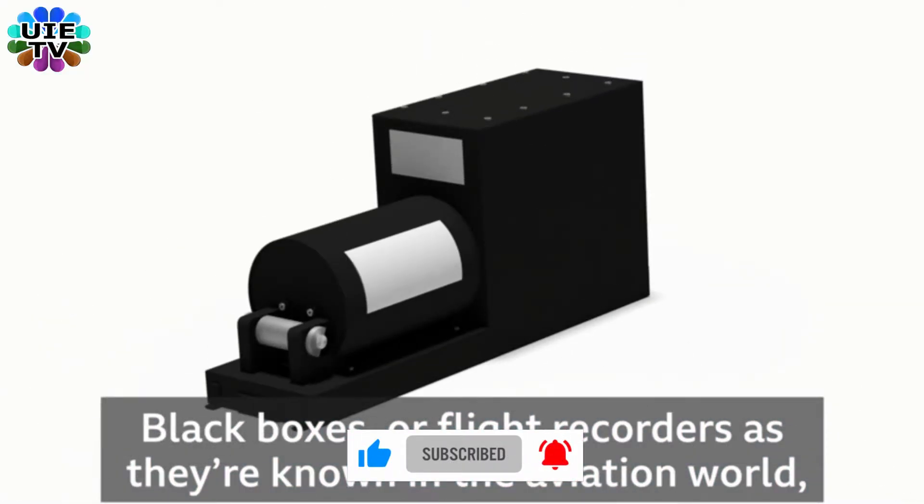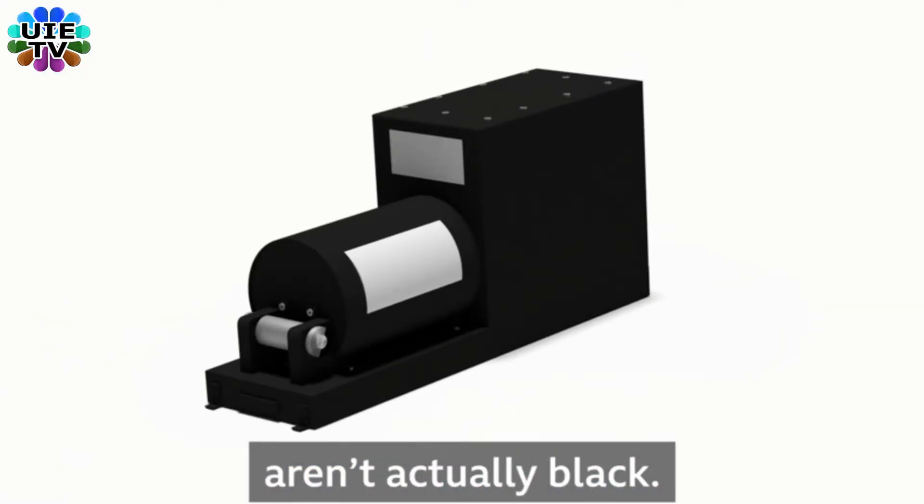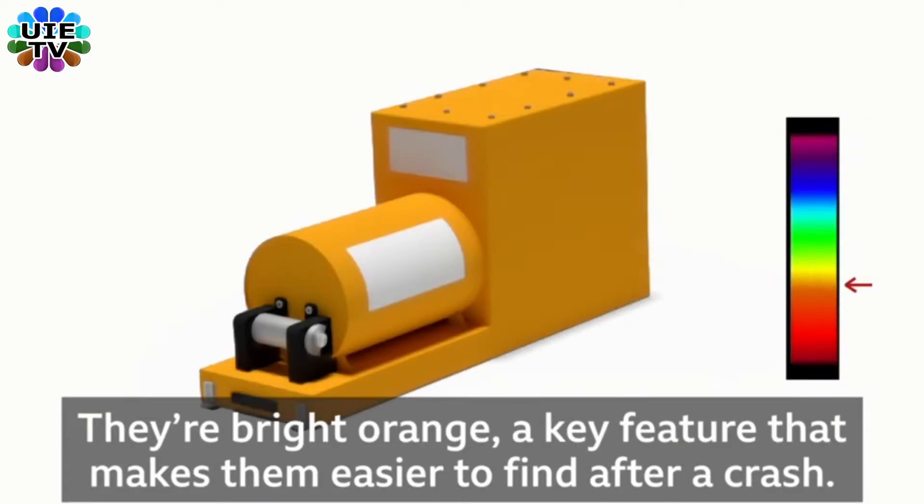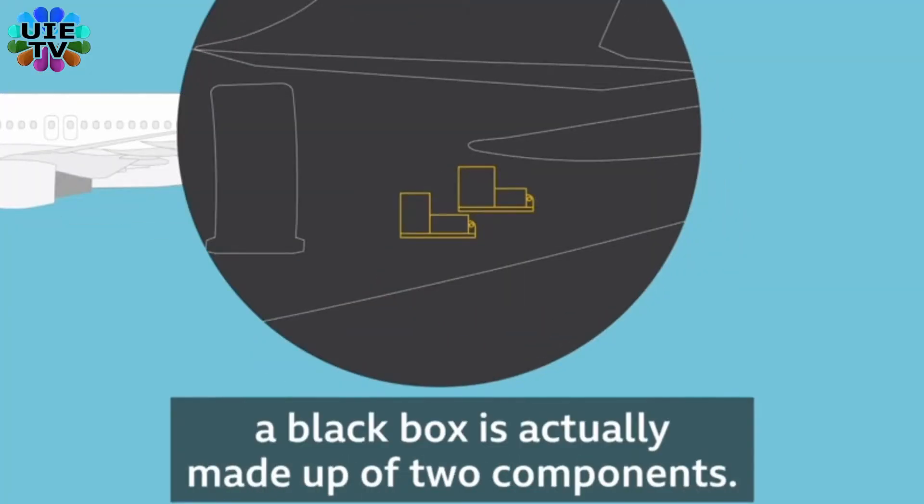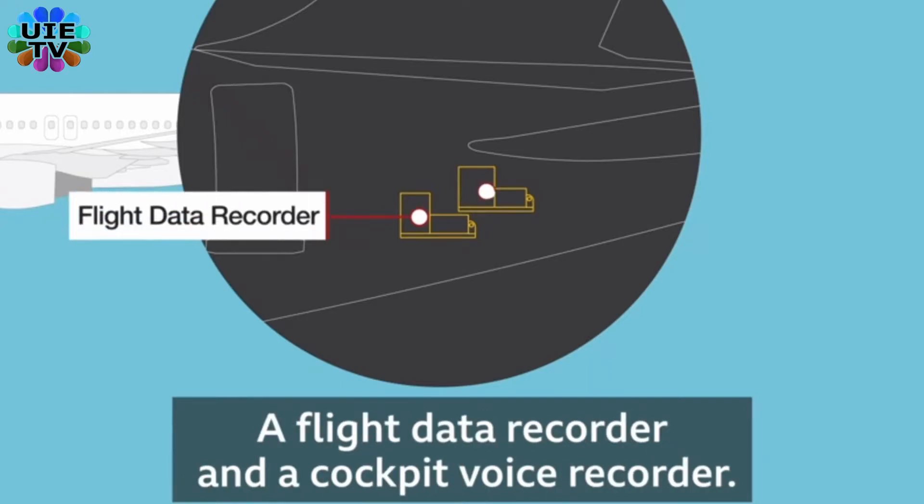Black boxes, or flight recorders as they are known in the aviation world, aren't actually black. They are bright orange, which makes them easier to find after a crash. About the size of a shoebox, a black box is actually made up of two components: a flight data recorder and a cockpit voice recorder.